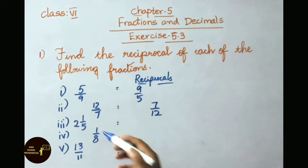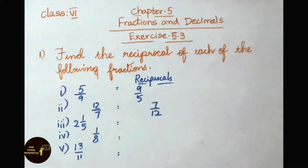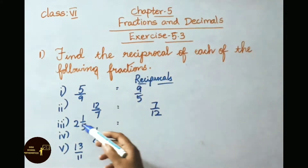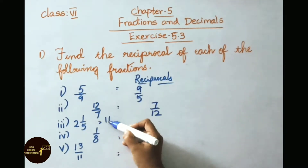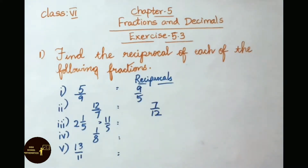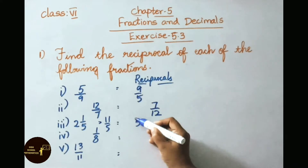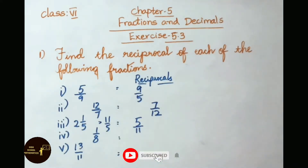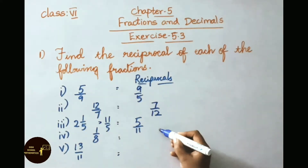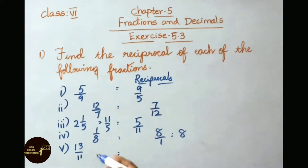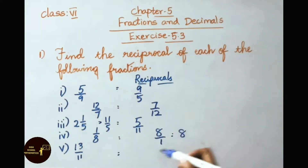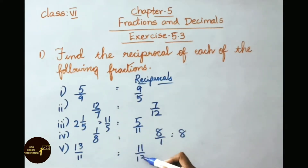See the third sum: 2 and 1 by 5. 2 and 1 by 5 can be written as 10 plus 1, that is 11 by 5. Now the reciprocal of 11 by 5 is 5 by 11. See the fourth sum: 1 by 8. Reciprocal of 1 by 8 is 8 by 1, that is 8. See the fifth sum: 13 by 11. Reciprocal of 13 by 11 is 11 by 13.